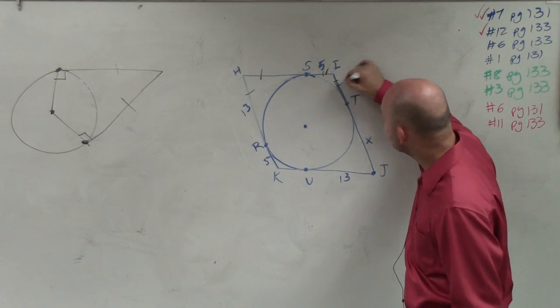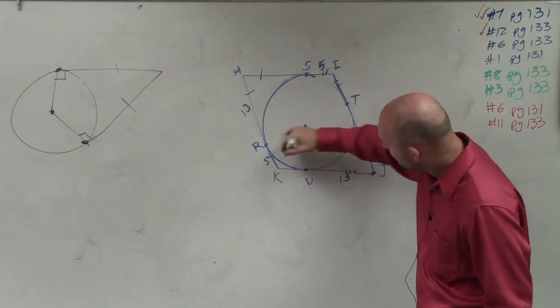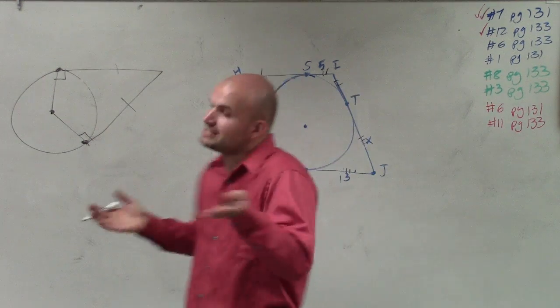These two are both tangent, so they're equal to each other. These two are tangent, they're equal to each other. And these two are tangent, so those are equal to each other. So if they're equal to each other, that means they have the same length.